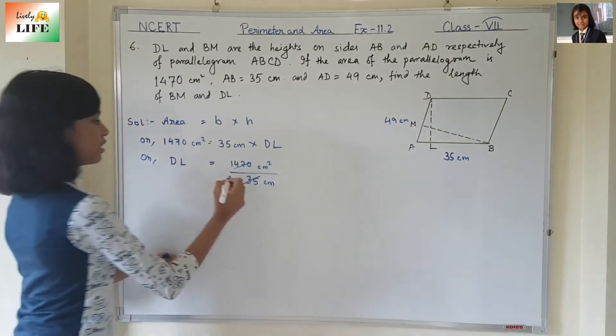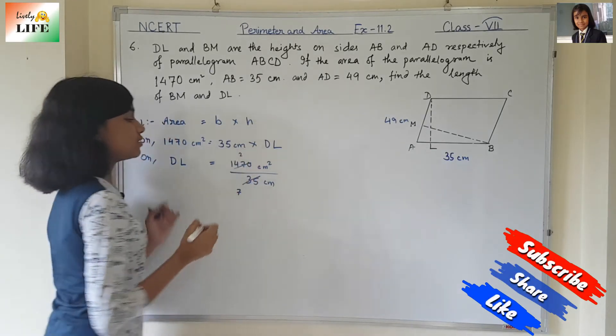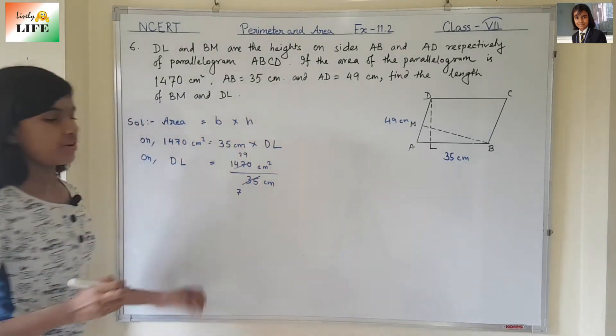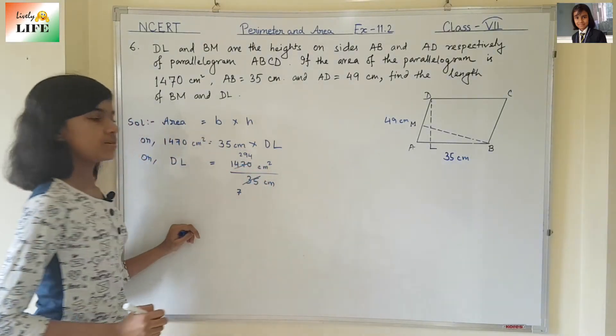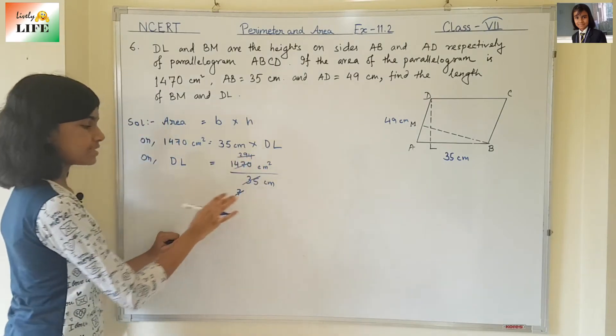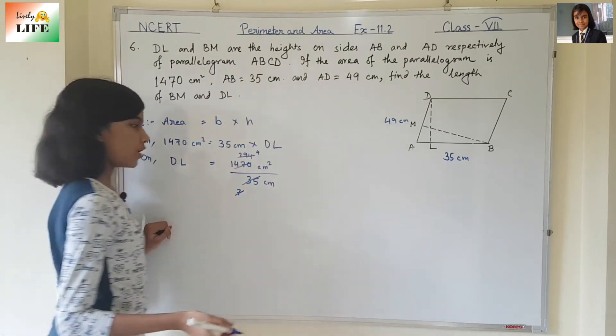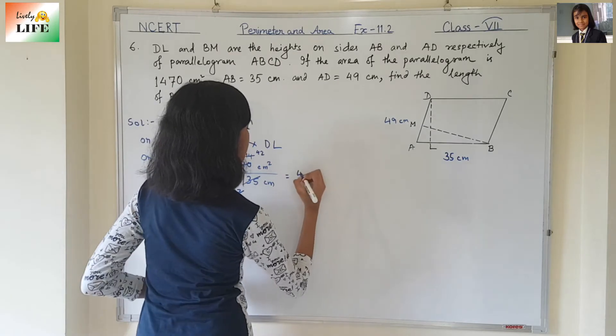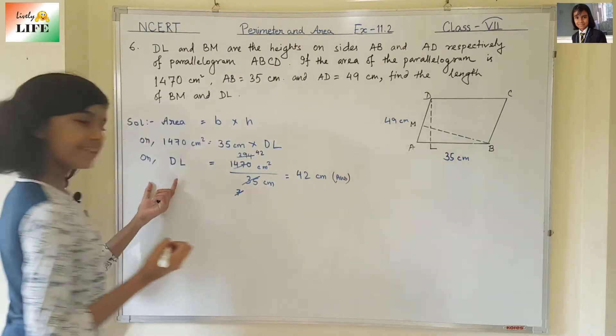Let's divide it by 5. 5 times 7 is 35. Over here, 5 times 2 is 10, 5 times 9 is 45, 5 times 4 is 20. Now, let's divide by 7. 7 times 4 is 28, 7 times 2 is 14. So what is the answer? 42 cm. This is the length of DL.